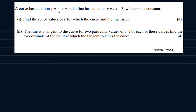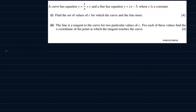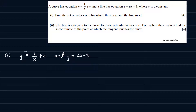This is another question involving the intersection of a curve and a line. What I'm going to do first is combine the two equations. We have y = 1/(x + c) and y = cx − 3. Since they're both expressions for y in terms of x and c, I'll set 1/(x + c) equal to cx − 3. Remember, 1/(x + c) is equivalent to y, and cx − 3 is also equivalent to y, so these two expressions are equal.